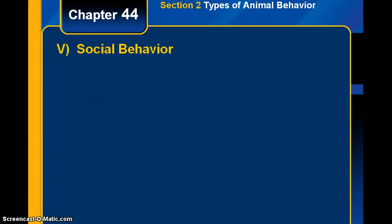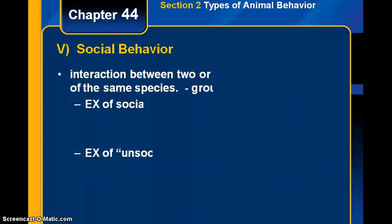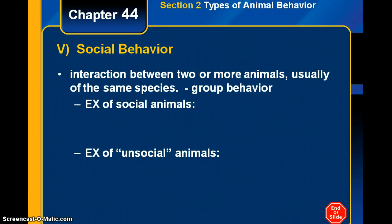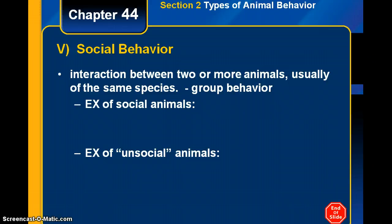The next type of animal behavior is social behavior — an interaction between two or more animals, usually of the same species. Social behavior is group behavior; social animals live in groups. Examples include bees and ants, which are definitely social. Spiders are unsocial, living by themselves. Fish and lions are examples of social animals.